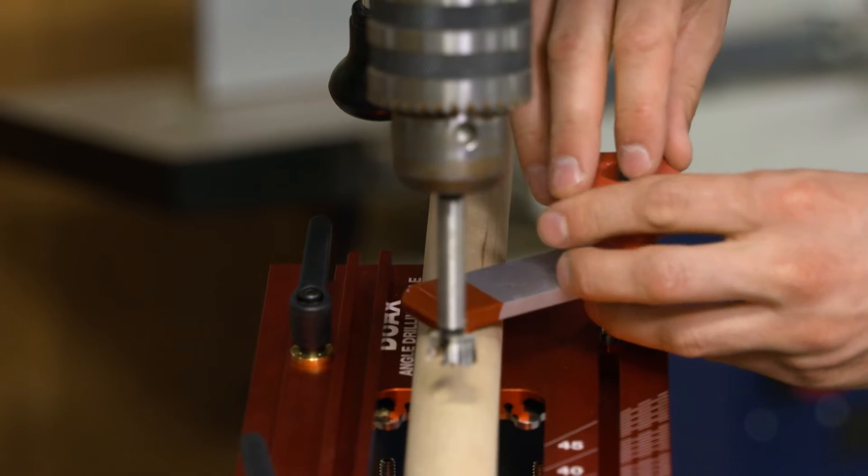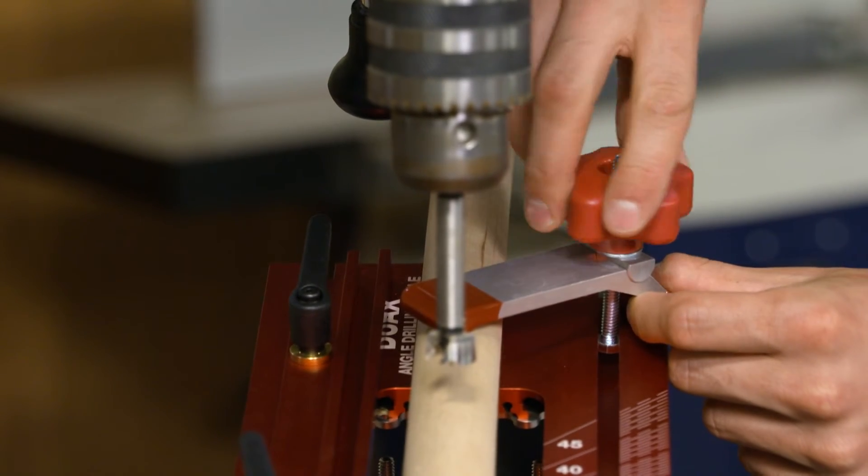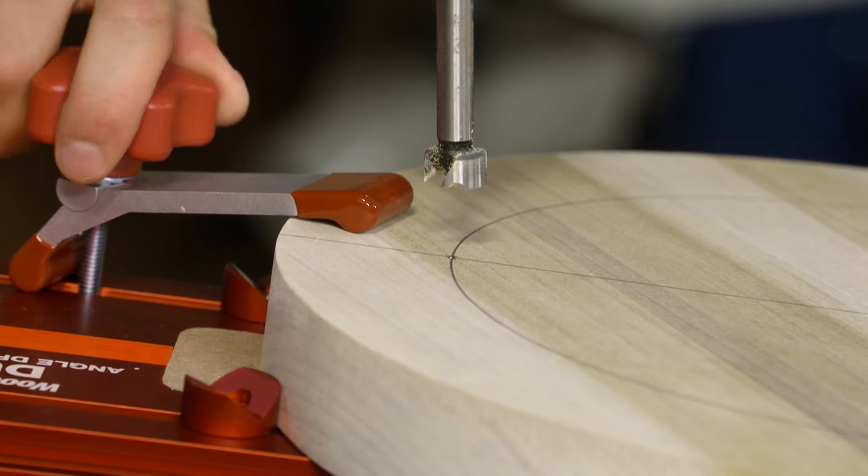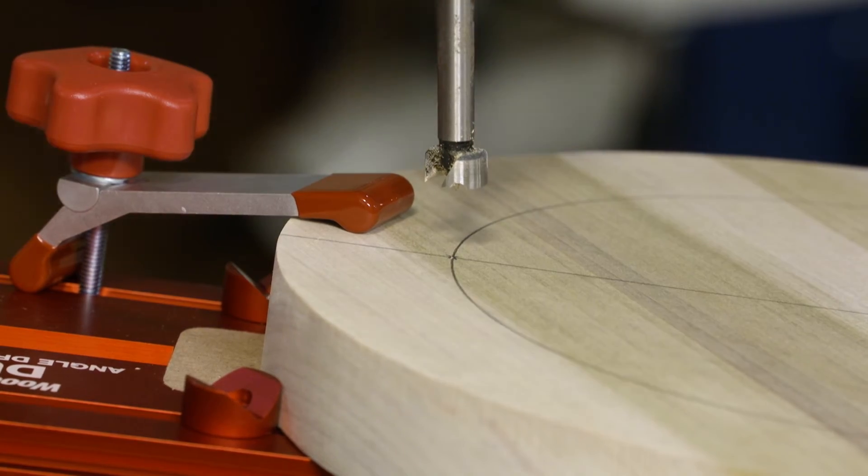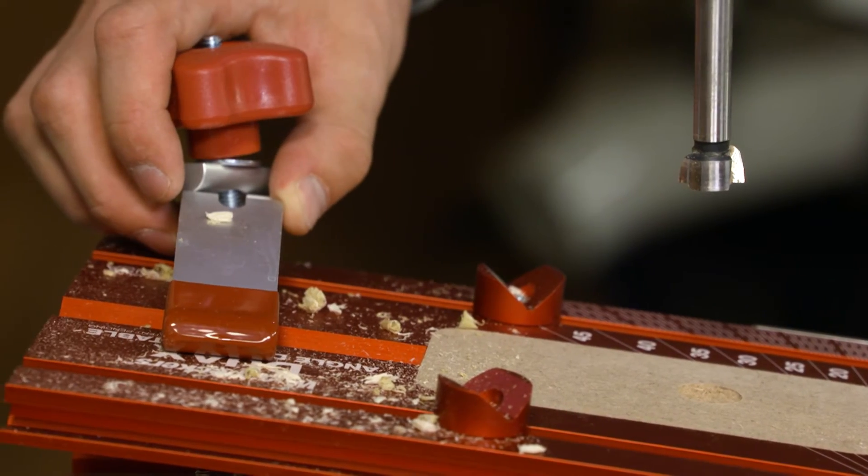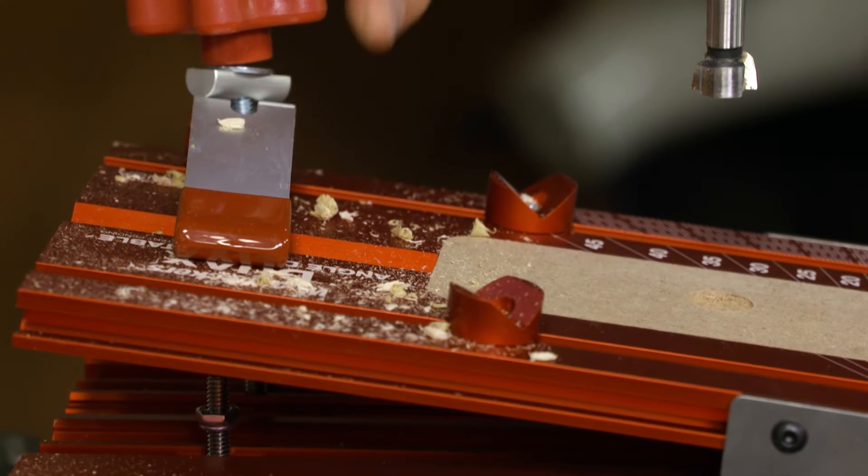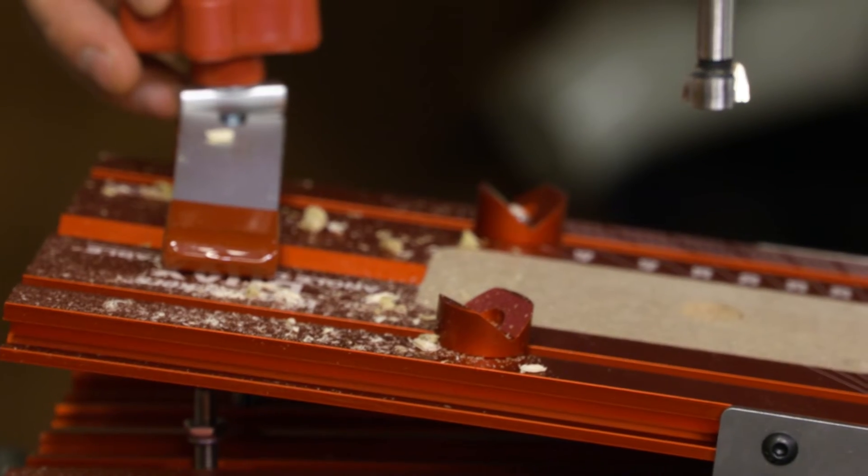These work really well because they give you a little bit more of a deeper reach, and these can be used on either side. Lastly, you have these button tabs that work really well for working with round parts, and these also have V-grooves in them. So if you're working with even a smaller dowel or round part, it rests right in that V-groove.